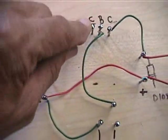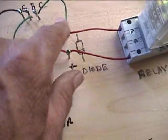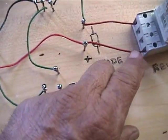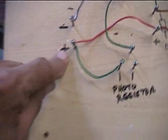So, negative of the battery goes to emitter, collector goes to diode and relay, then the other terminal of the relay goes to diode and to positive.